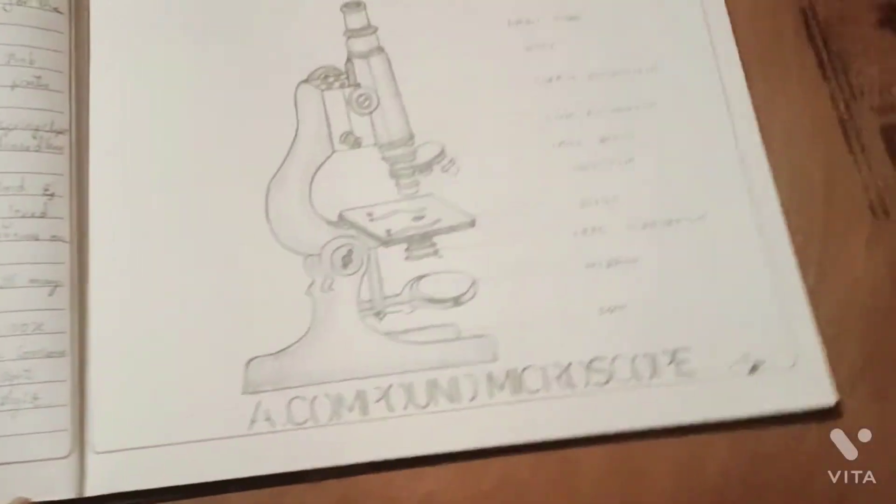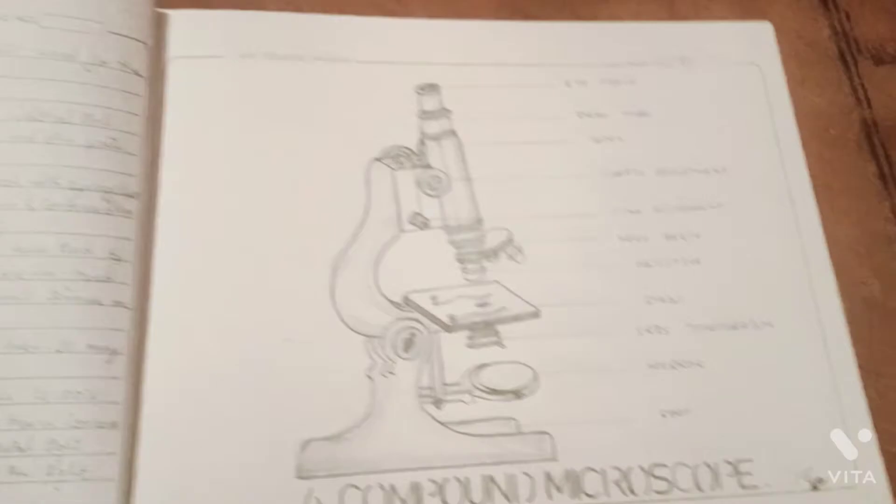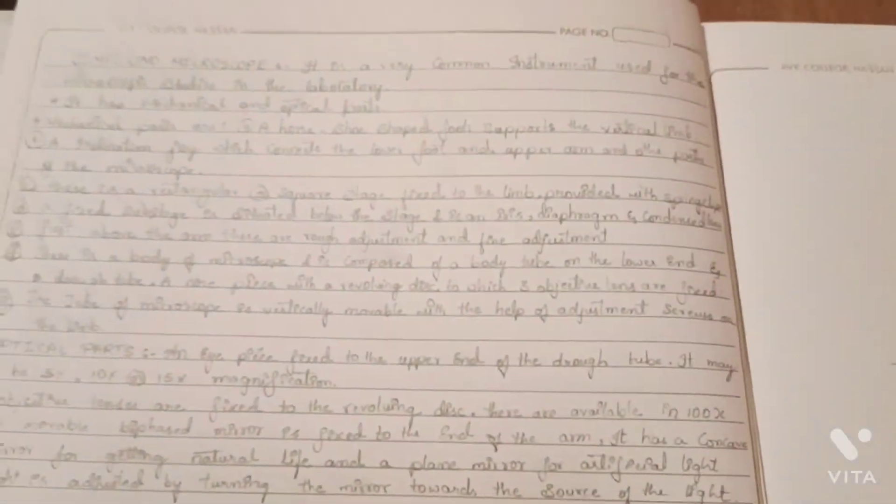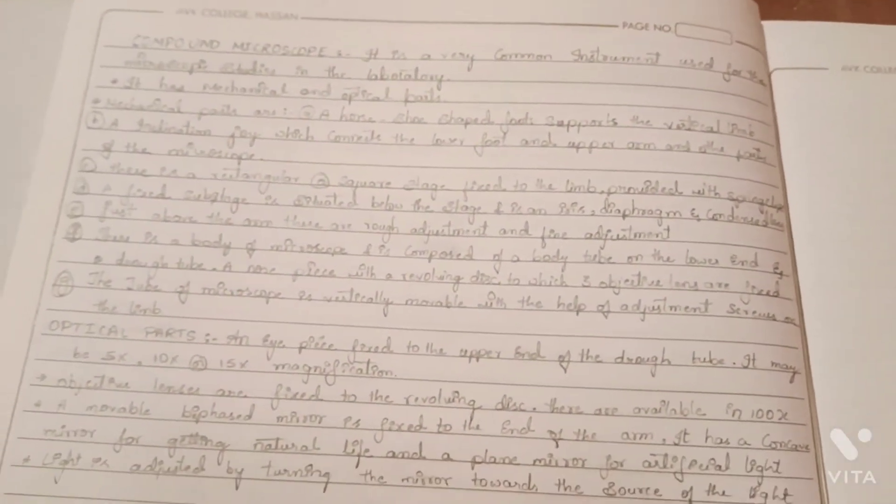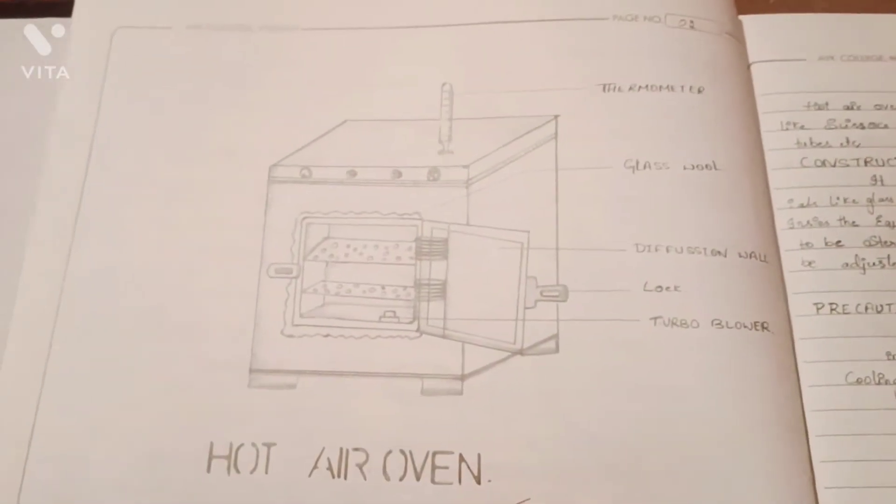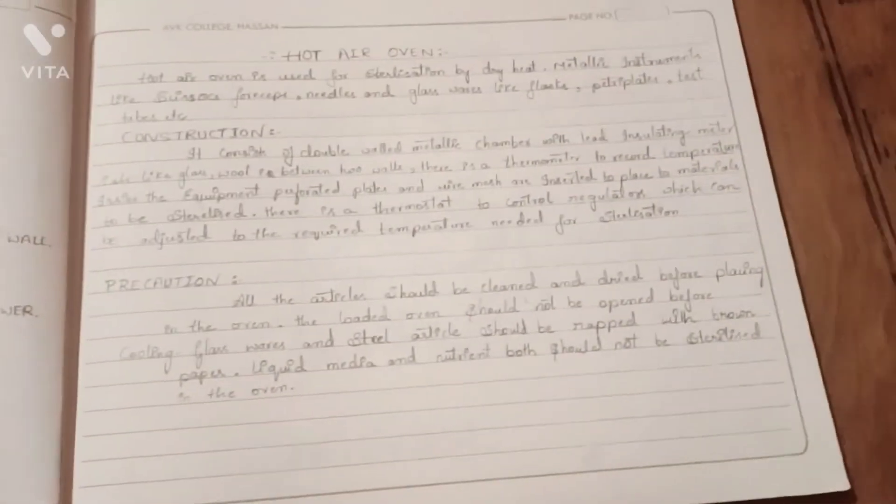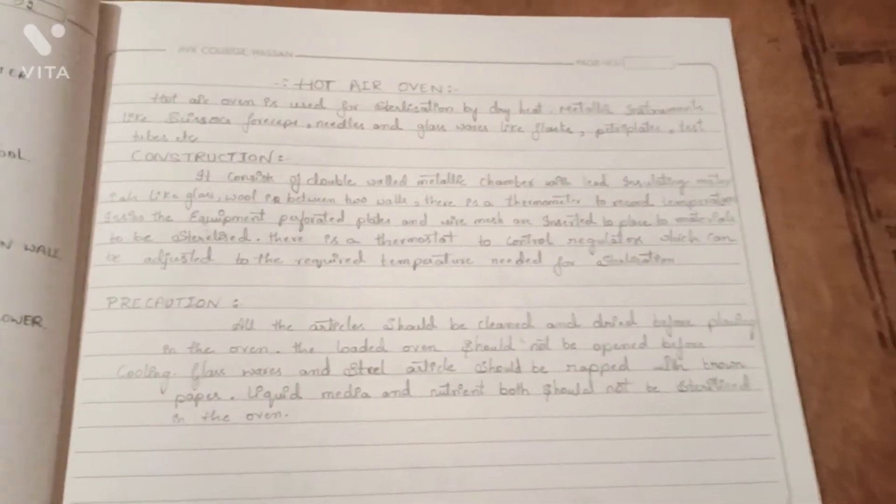Firstly, we have to draw a compound microscope and there are the comments. And then came to the hot air oven. You can see this in your botany lab.